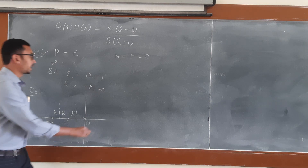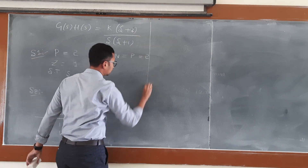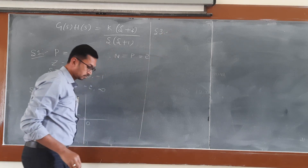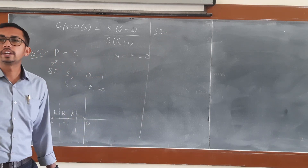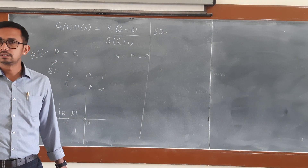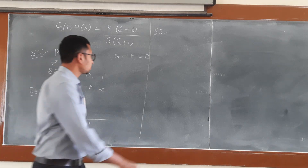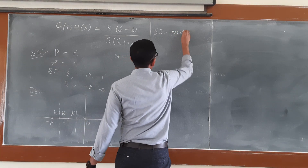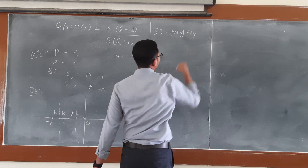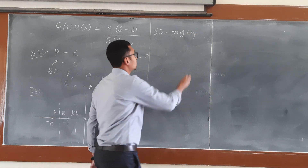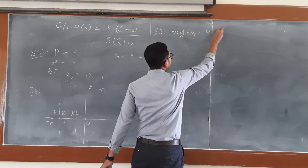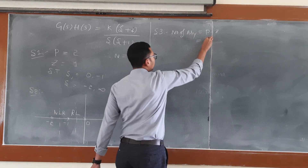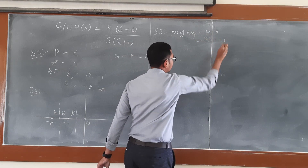Step number 3: find the number of asymptotes, which equals P minus Z. Number of poles is 2, number of zeros is 1, so 2 minus 1 equals 1. There is only one asymptote.